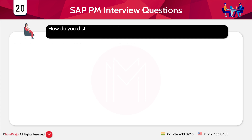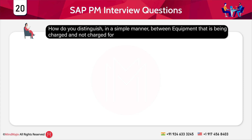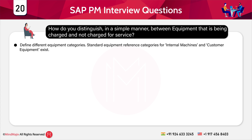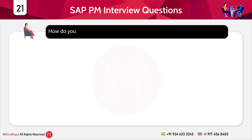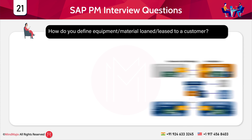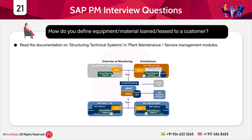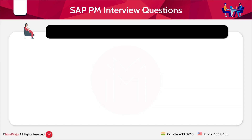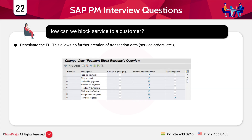How do you distinguish between equipment being charged and not charged for a service? Define different equipment categories — standard reference categories for internal machines and customer equipment exist. How do you define equipment on material loan or lease to a customer? Read the documentation on structuring technical systems; you need to define a sales area for equipment where the equipment reference category is customer equipment. How can we block service to a customer? Deactivate the functional location (FL), which prevents further creation of transaction data such as service orders, though existing orders can still be processed and closed.